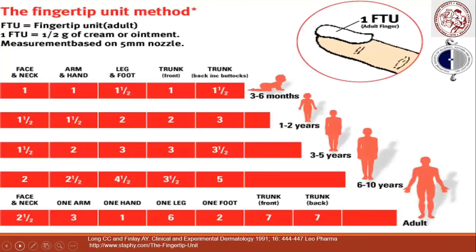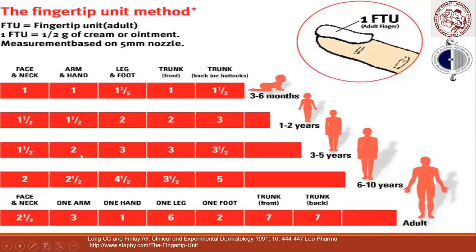It is important to know how much steroid to apply. The most practical method is the fingertip unit, using the distal end of the second finger. Depending on patient age and area affected, the correct number of fingertip units should be applied, and we should prescribe the appropriate number of tubes to ensure the patient's condition actually improves.